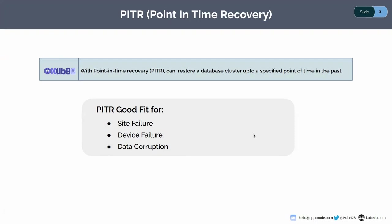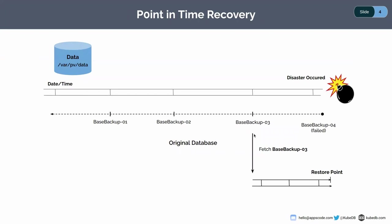Now let's go to the next slide. Here you can see a good image explaining point-in-time recovery. Let's initially assume that we don't have the continuous archiving feature for our database cluster — like we don't have WAL archiving. We only have the basic features with some scheduled content. With this kind of recovery, if any kind of disaster happened, we can recover, but we're going to lose some data.